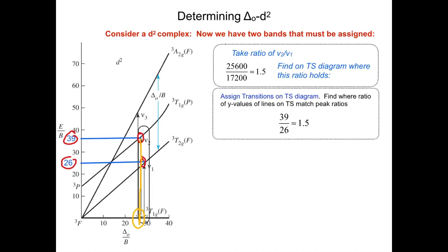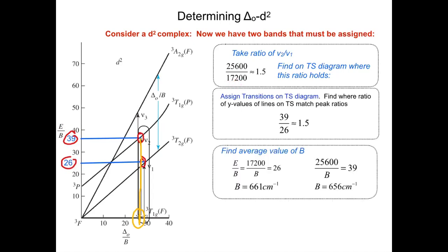We can now use these values that we got for our y-axis values. Remember this value is equal to E over B, and we can use that to solve for B. We know this is the y value. E in this case would be the 25,600, and in this case E is the 17,200. We can use that to calculate what B is. When I did it, we have two values of B: 661 and 656 wavenumbers.